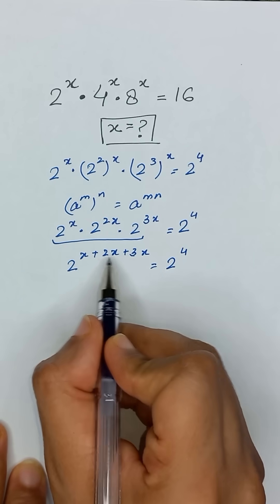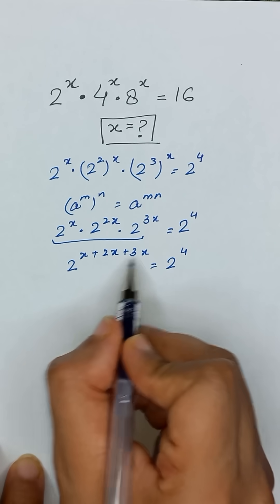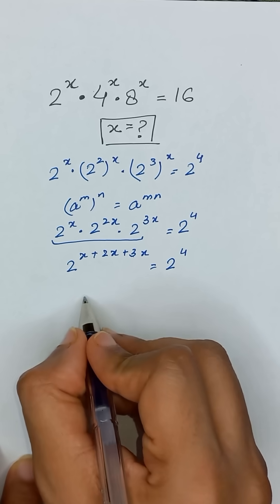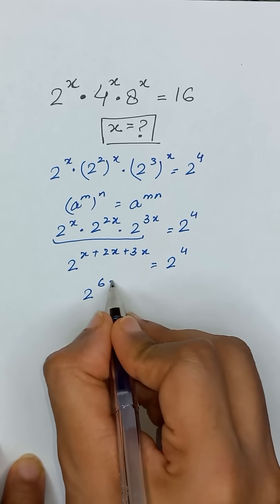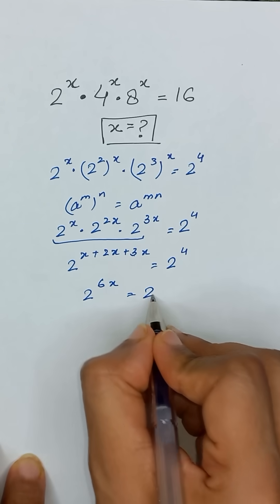3x plus 2x equals 5x, and 5x plus x equals 6x. So 2 to the power 6x equals 2 to the power 4.